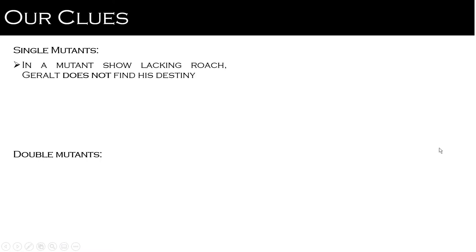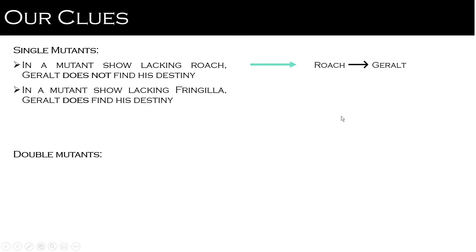We've got some clues to help us figure this out. For single mutants: in a mutant lacking Roche, Geralt does not find his destiny — Roche promotes the transcription of Geralt. In a mutant lacking Fringilla, Geralt does find his destiny, illustrated as Fringilla blocking or repressing the transcription of Geralt finding his destiny.